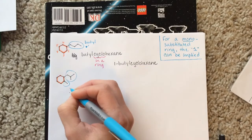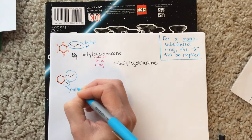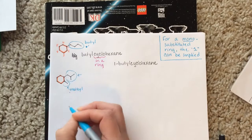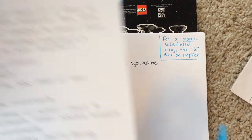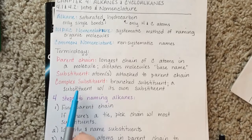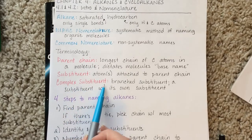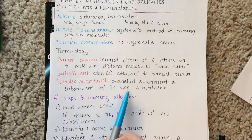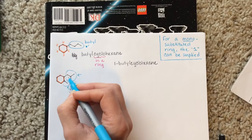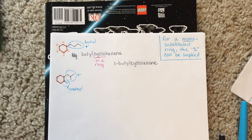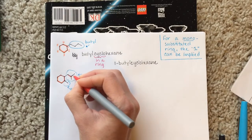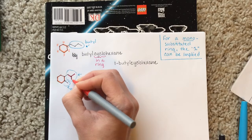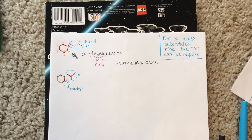This substituent we've seen before — that's methyl, the one-carbon substituent. This other substituent is complex. Remember from a couple videos ago: a complex substituent is a branched substituent, or a substituent with its own substituent. This little one is a three-carbon substituent with a methyl group hanging off the middle of it, so that one is complex.